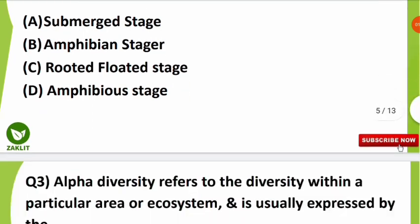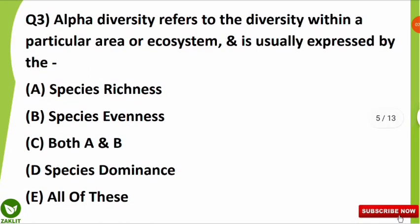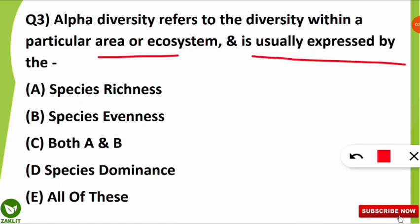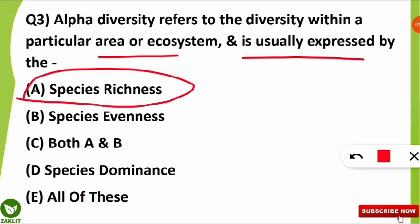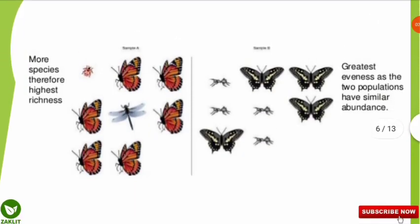The next question was: alpha diversity refers to the diversity within a particular area or ecosystem, and is usually expressed by which of the following terms? Alpha diversity in an ecosystem is usually expressed by species richness. Most students are confused between species richness and species evenness, so these are very important terms we will clarify in the next slide.